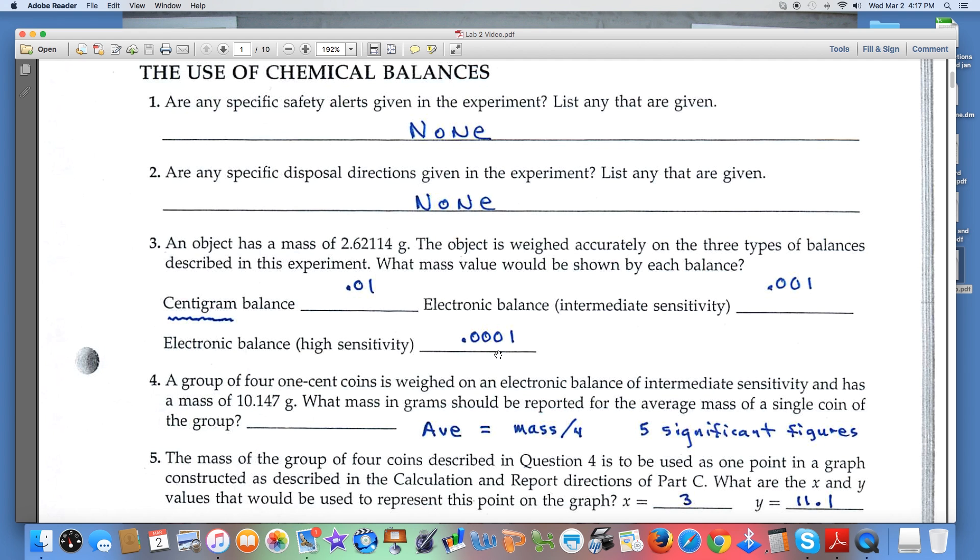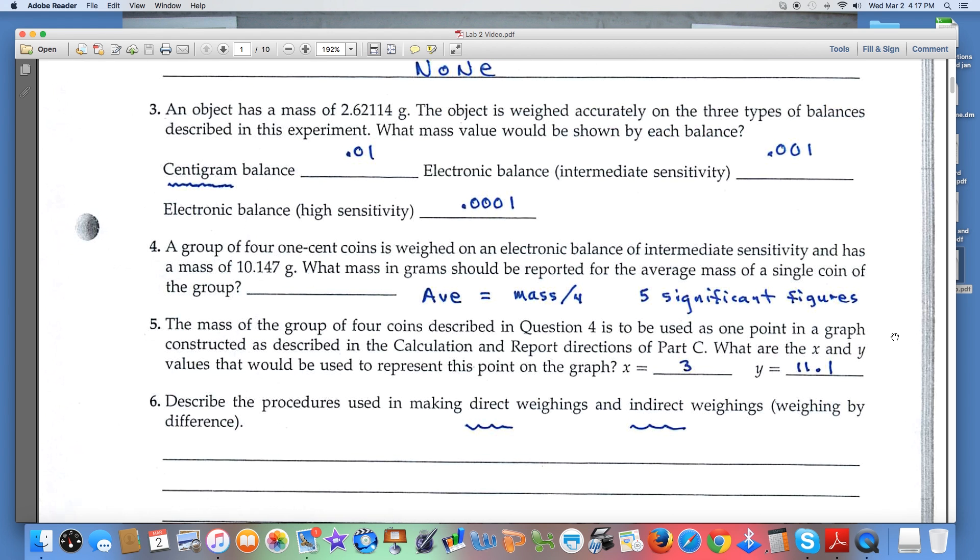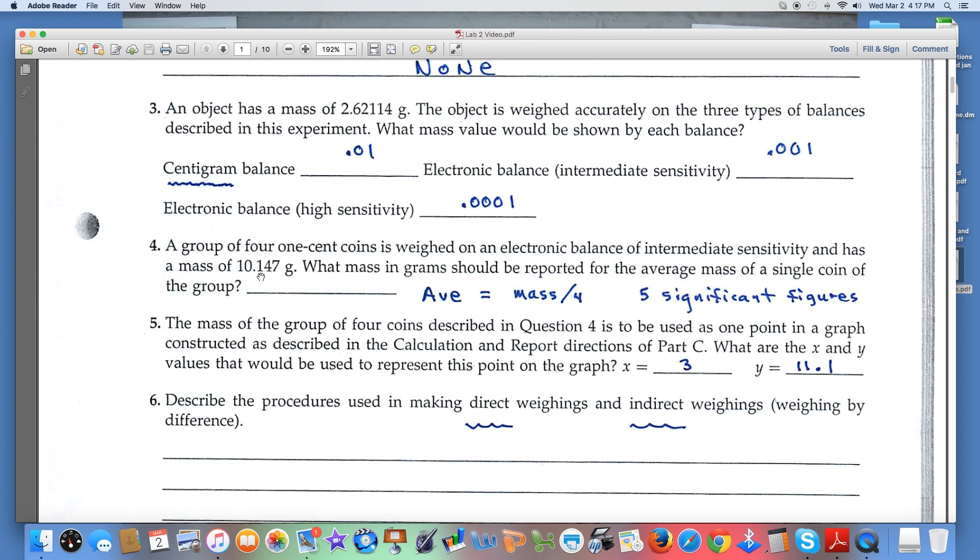Question number four says that we've weighed four coins, we've got a total mass there, and what would we report for the average mass? To get the average, you divide the total mass by the number of objects, number of coins in this case, so we'd be dividing by four. That four is an exact number with infinite significance, so the 10.147 is going to be the limiting factor. It has five significant figures, so that's how many should be in your answer.